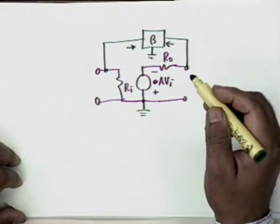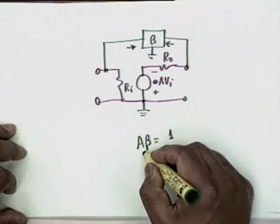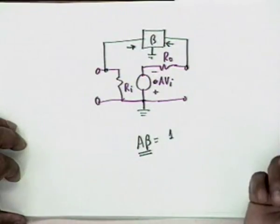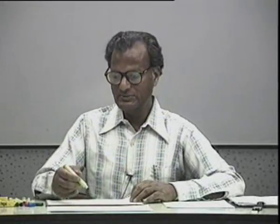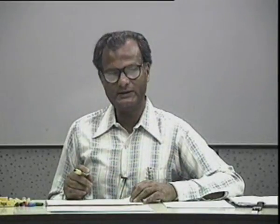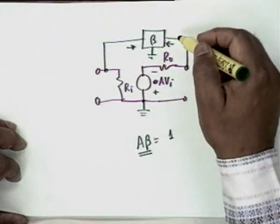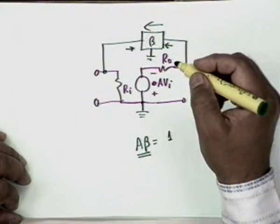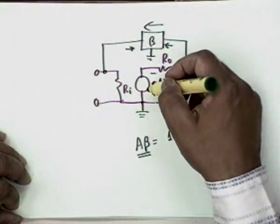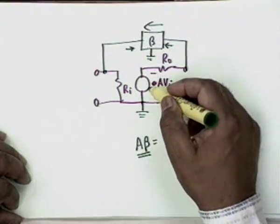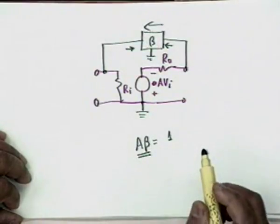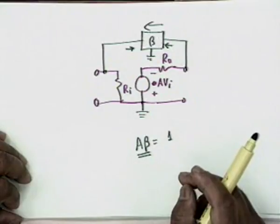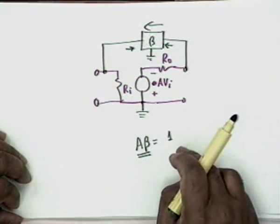In the RC phase shift oscillator, the beta network must produce a 180° phase shift because we want the angle of Aβ to equal 0° (or 360°). Since the amplifier is phase-inverting (180°), the beta network must add another 180°. Because the beta network is passive, it also introduces attenuation — the gain of the beta network will be less than 1, which is compensated by the basic amplifier. If β = 1/29, then A must be 29 to generate oscillations.